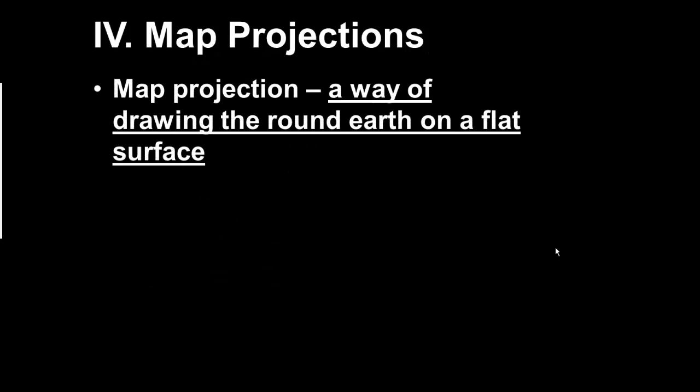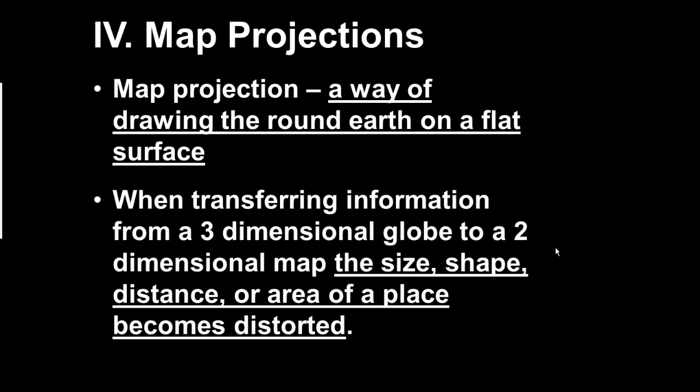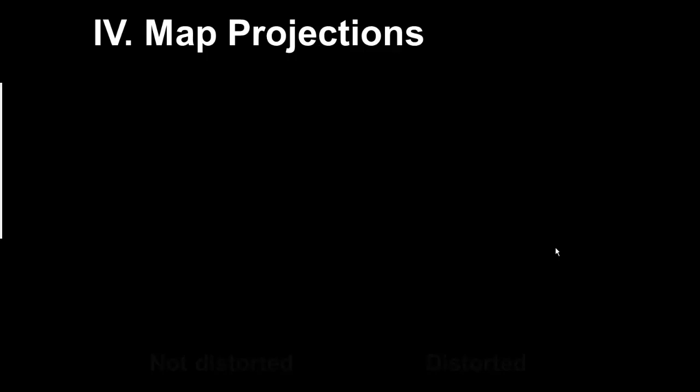This brings us to map projections. Map projections are just a way of drawing the Earth, which is round, on a flat surface. There are some problems that occur with this because when you transfer information from a three-dimensional object, which is the Earth, to a two-dimensional page, it becomes distorted. So the size, shape, or distance of an area becomes distorted. We'll take a look at that in the next picture.